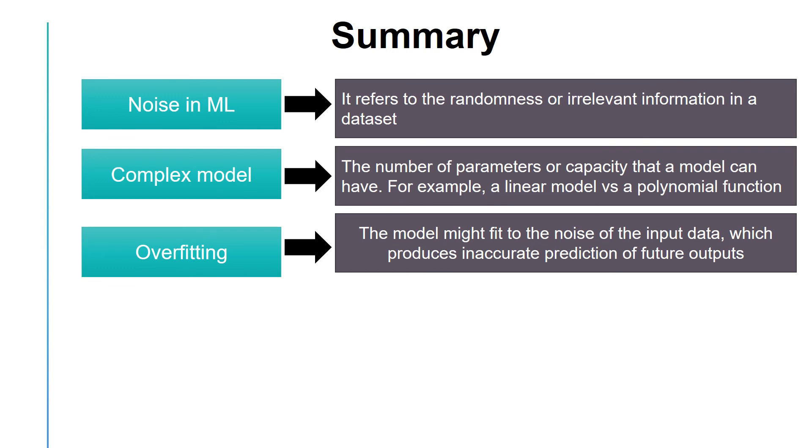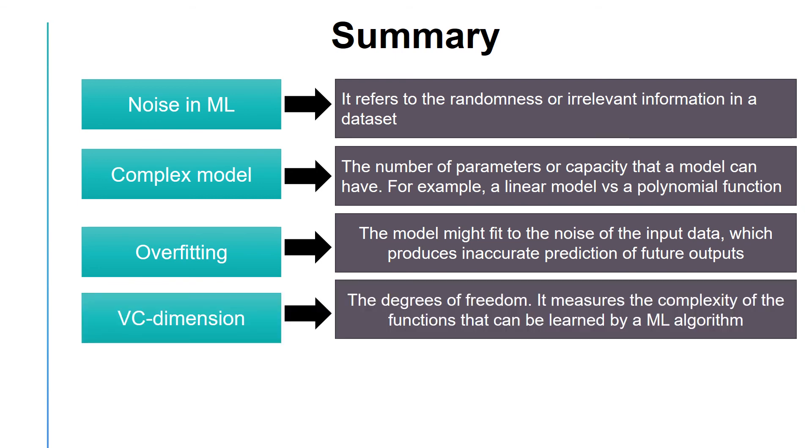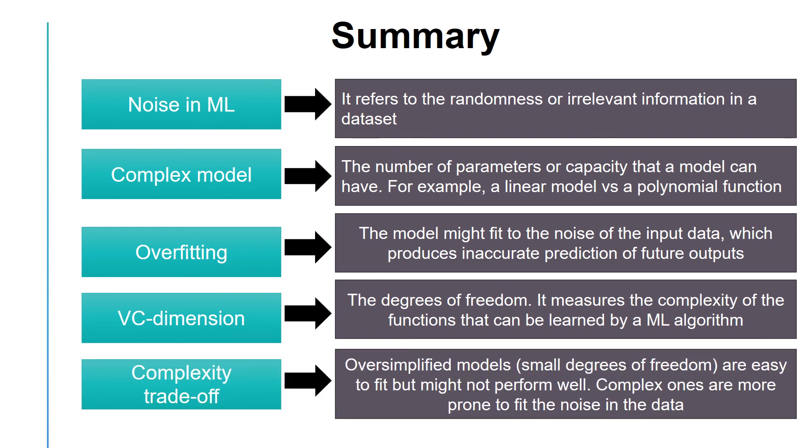It will then produce inaccurate predictions for future and unseen data. We talked about VC dimension, which refers to the degrees of freedom in a model. It measures the complexity of the functions that can be produced by a machine learning algorithm. Finally, we discussed the complexity trade-off. Oversimplified models, that is, the models with small degrees of freedom, are easy to fit but might not perform well and could result in underfitting. On the contrary, complex ones are more prone to the noise in the data, which could create overfitting. In the next videos, we discuss ways to handle this trade-off.